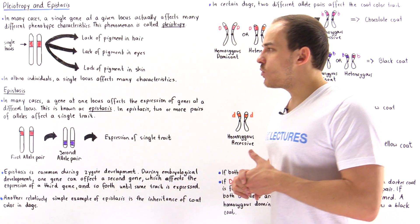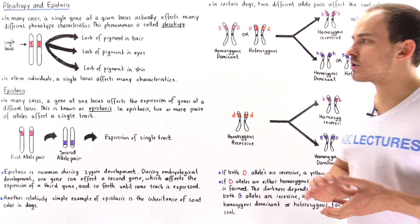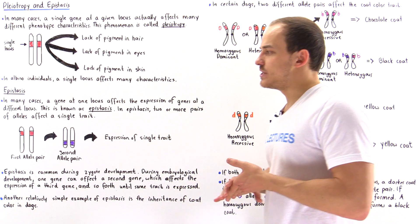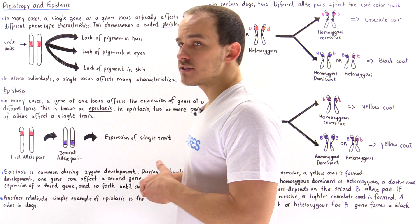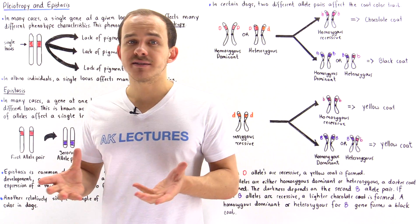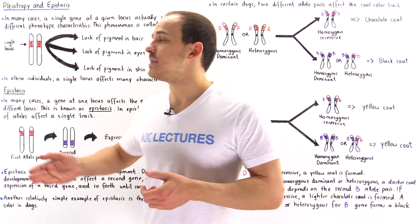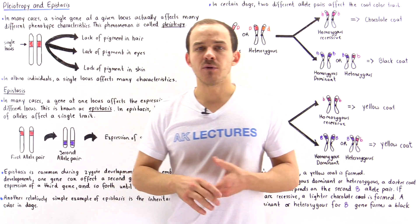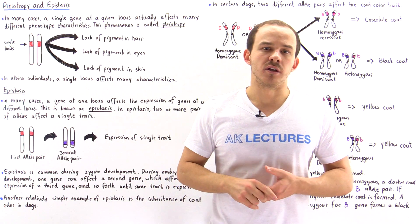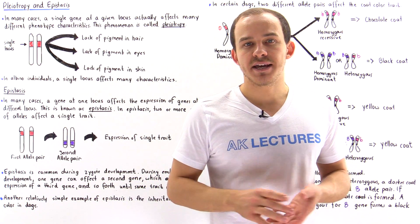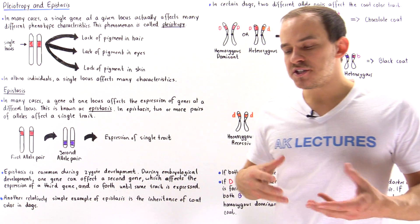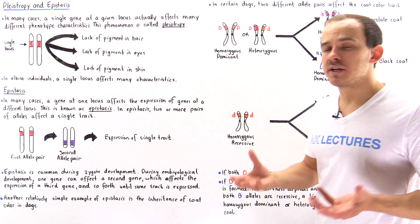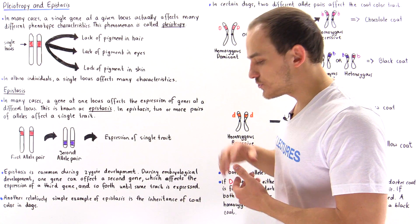In this lecture we're going to focus on two important phenomena that exist in genetics. We're going to discuss a concept known as pleiotropy, and we're also going to look at epistasis. So let's begin by describing what pleiotropy is.